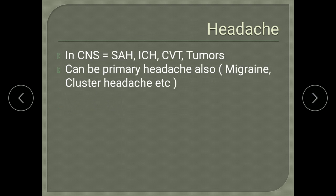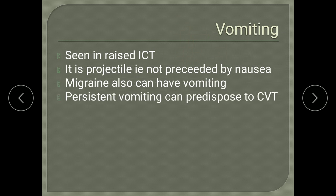Ask for history of headache, which can be primary or secondary to CNS disease. Primary headaches include migraine and cluster headache. Secondary headaches in CNS occur with subarachnoid hemorrhage, ICH, cortical venous thrombosis, and space-occupying lesions. Vomiting is a feature of raised ICP, especially if it is projectile — that is, not preceded by nausea. Migraine patients can also have vomiting with headache, and persistent vomiting can be a predisposing factor for cortical venous thrombosis.